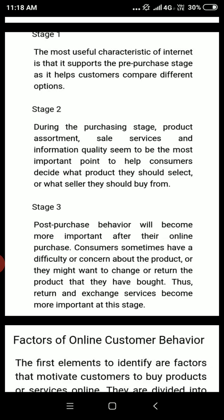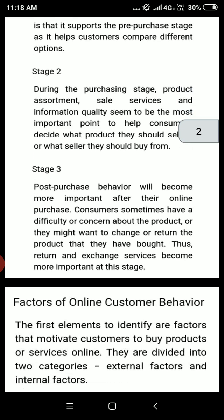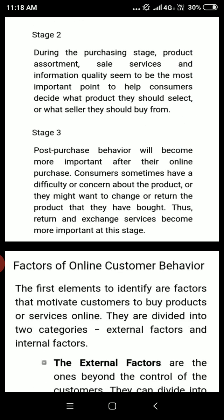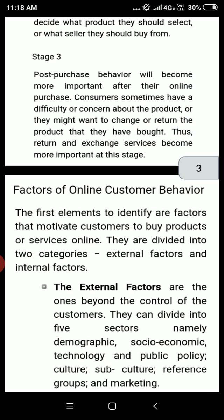During the purchasing stage, product assortment, sales services, and information quality seem to be the most important points to help consumers decide what product they should select or what seller they should buy from. We check the quality, services offered, and product packaging before selecting. We can buy from Flipkart, Amazon, or Myntra.